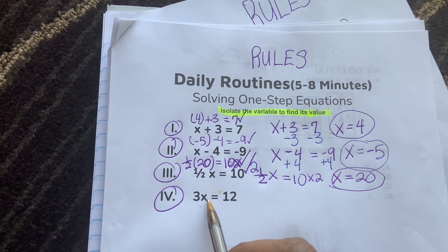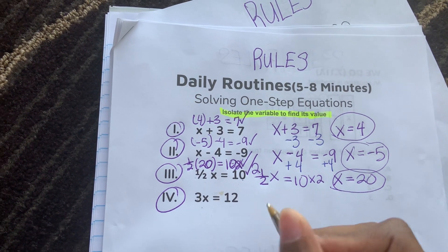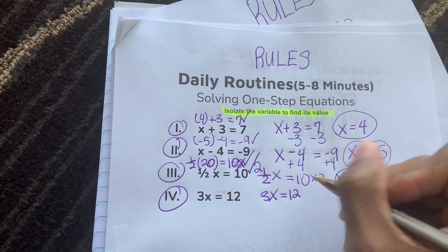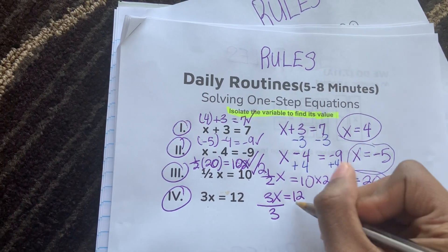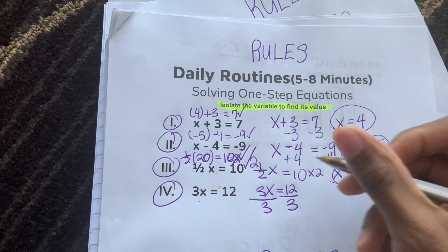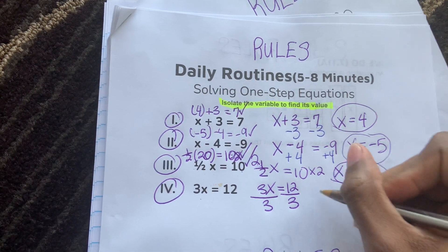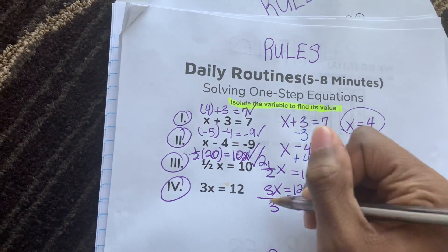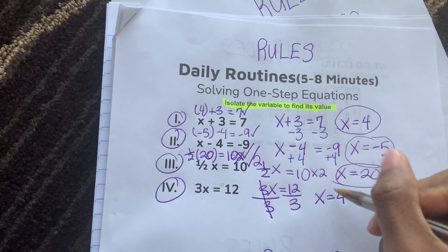So 3x, the opposite of multiplication is division. So we'll do 3x is equal to 12, divide by 3, divide by 3, and we're left with x is equal to 4. The 3s cancel out, 12 divided by 3 is 4.